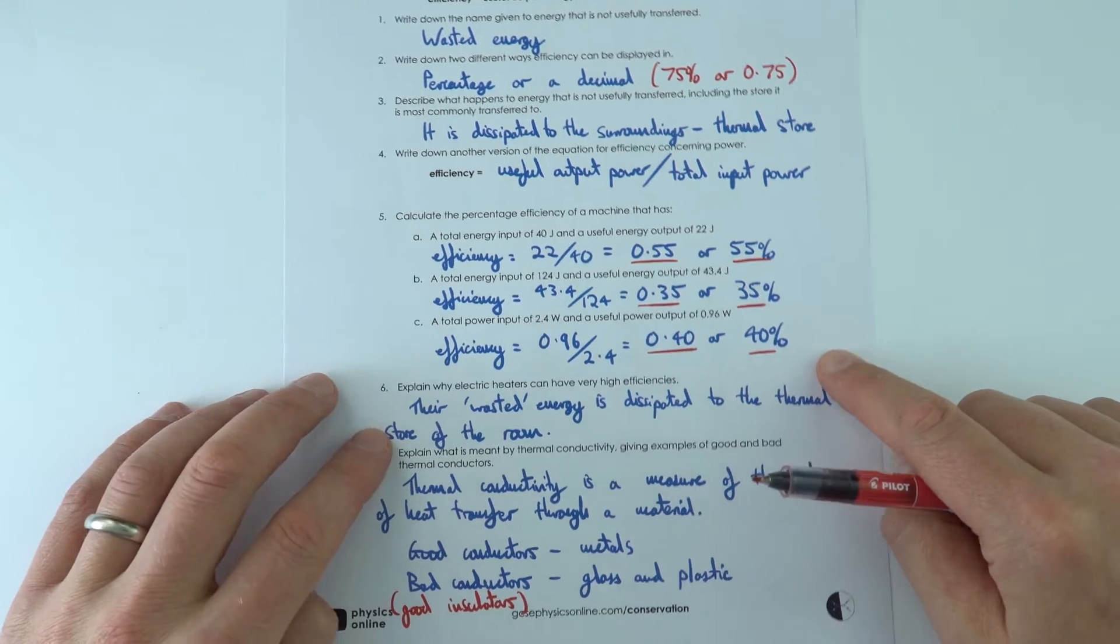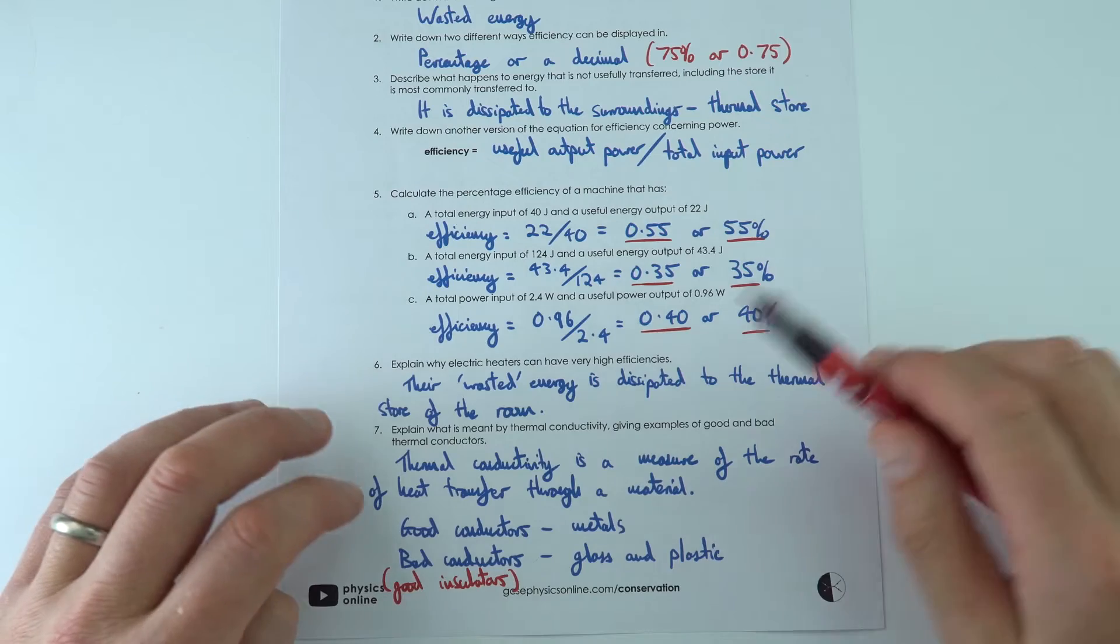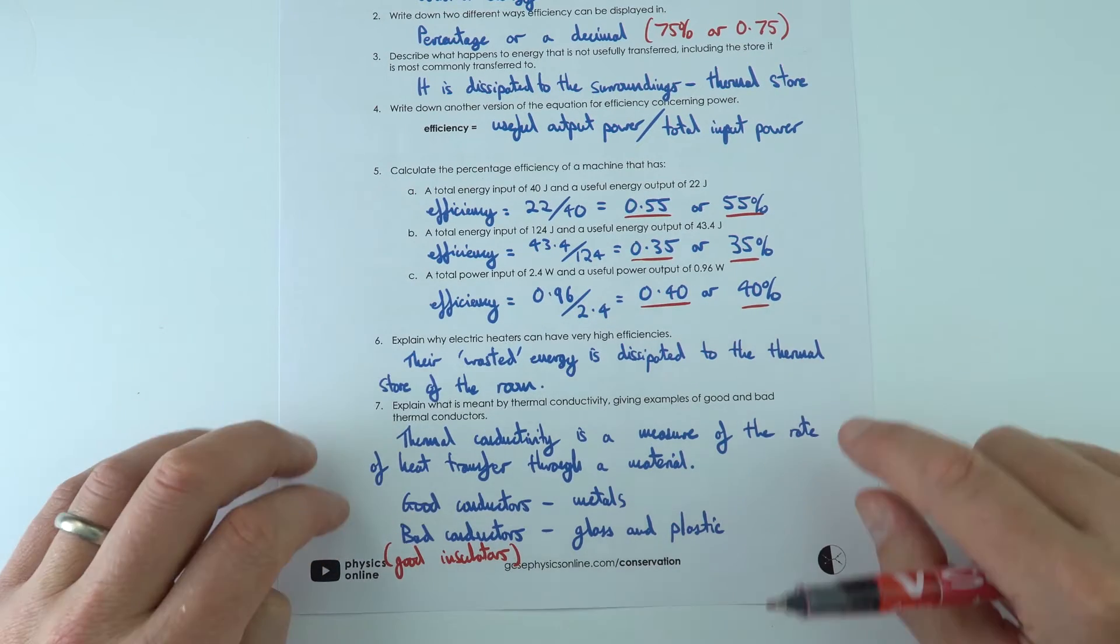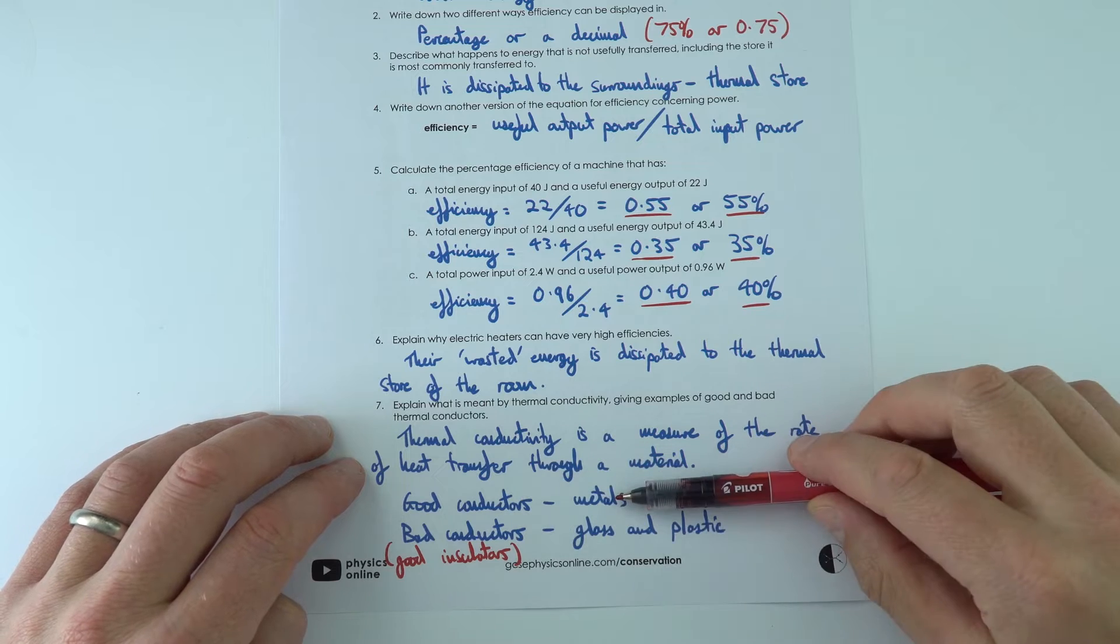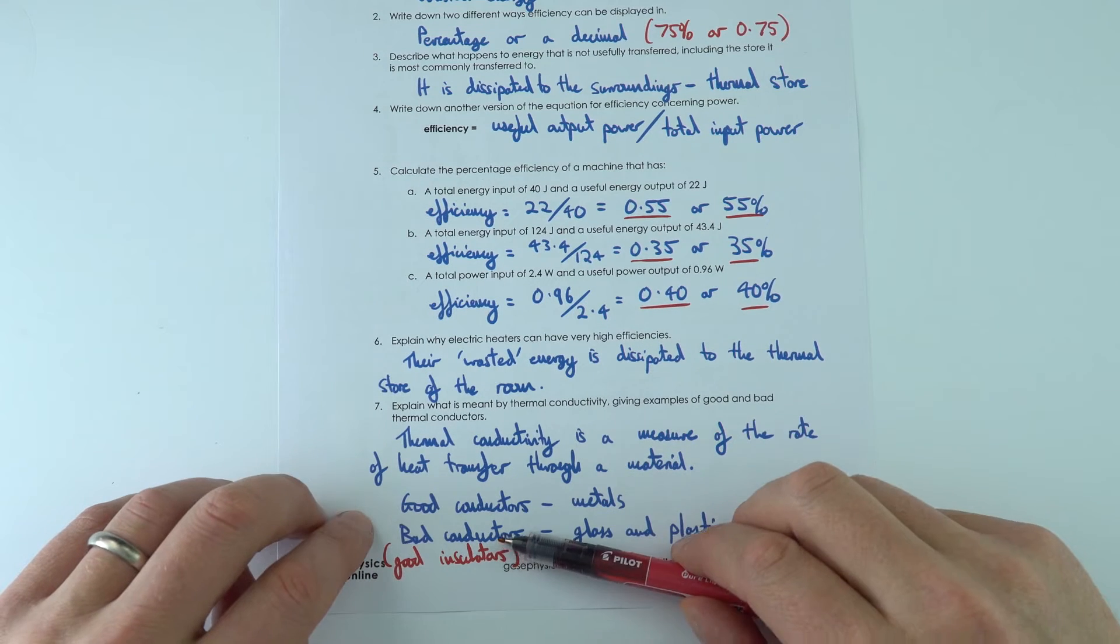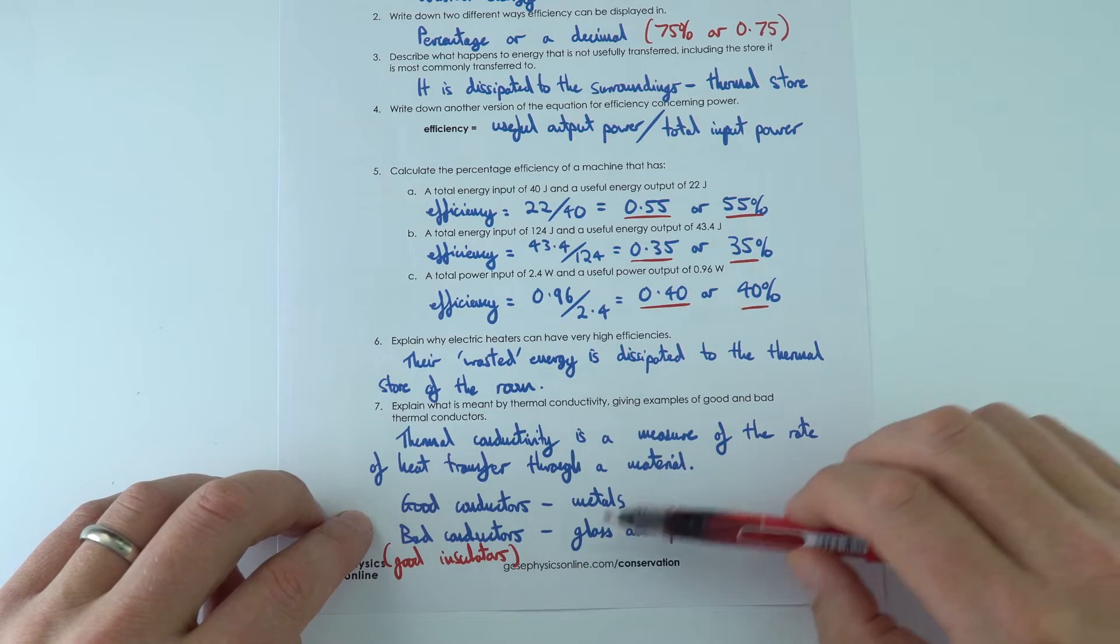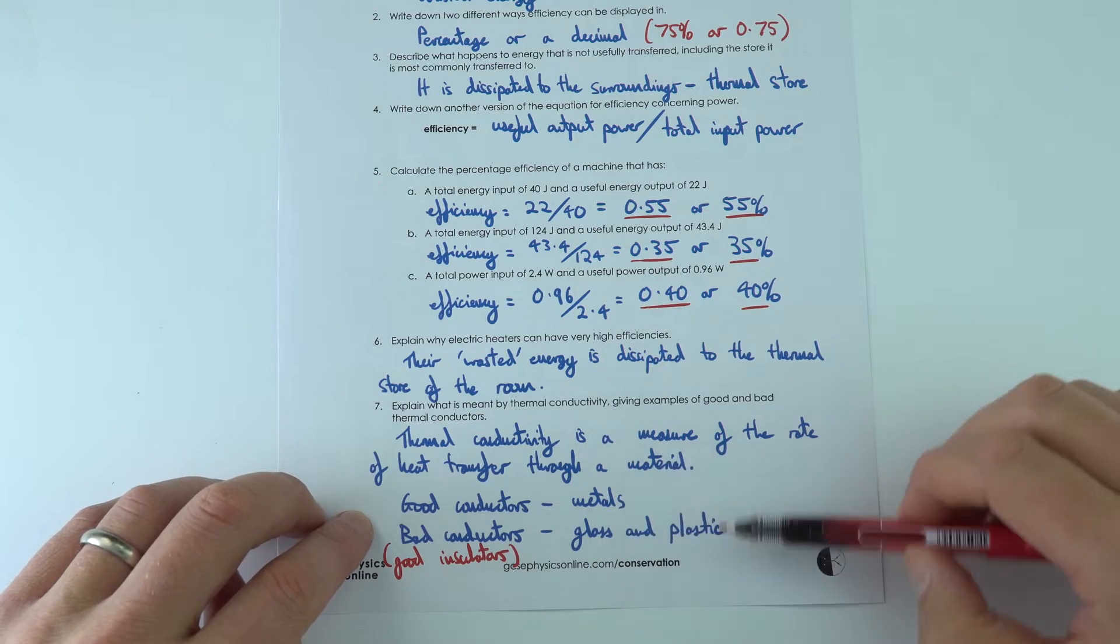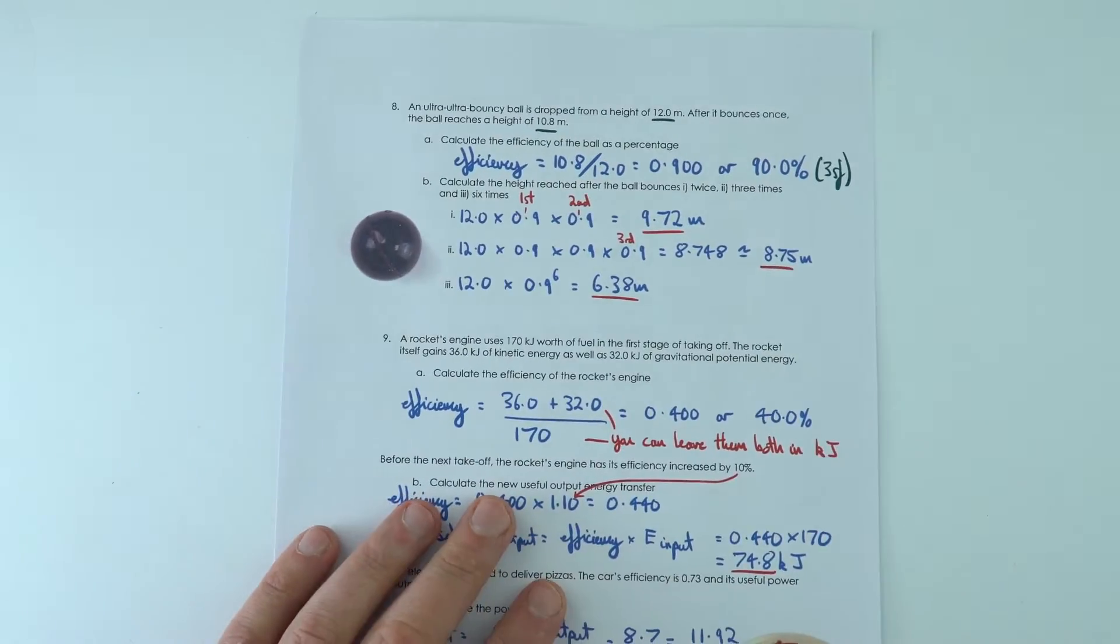We then had a look at thermal conductivity, which is basically a measure of the rate of heat transfer through the material. You've got great conductors like metals and then bad conductors or also known as good insulators which don't allow heat transfer very quickly through them, things like glass and plastic.